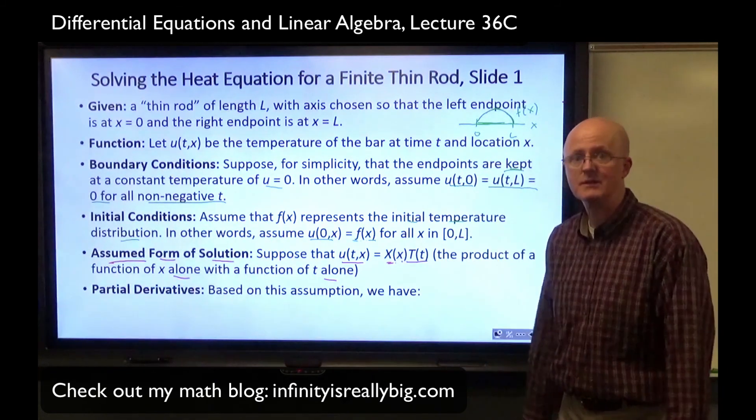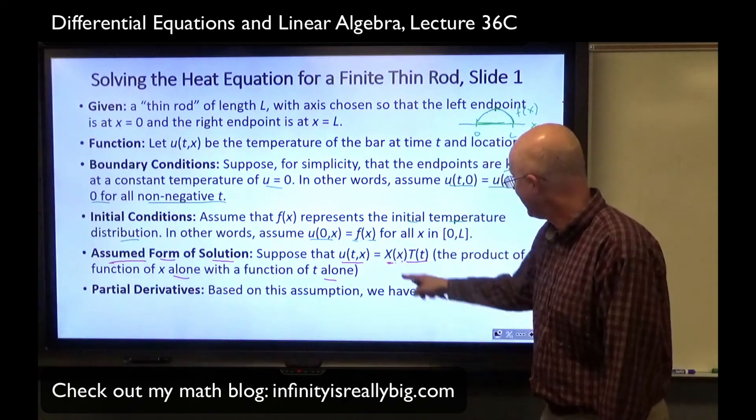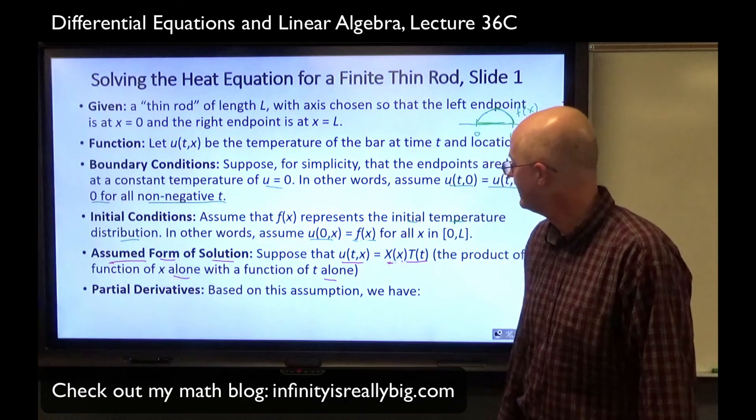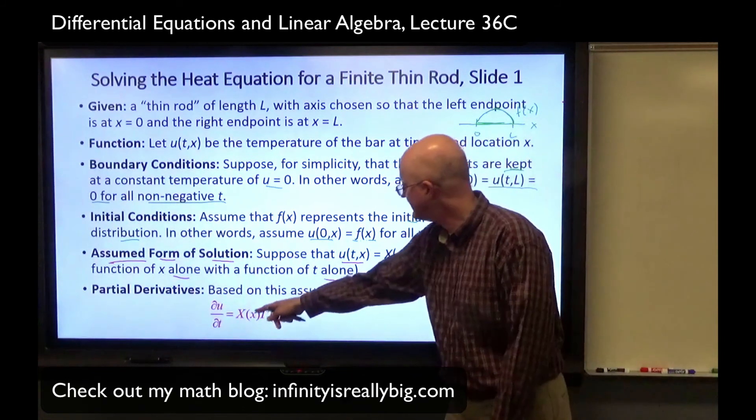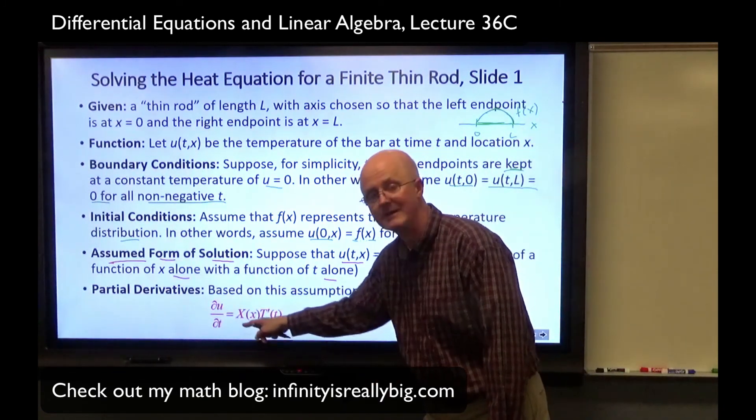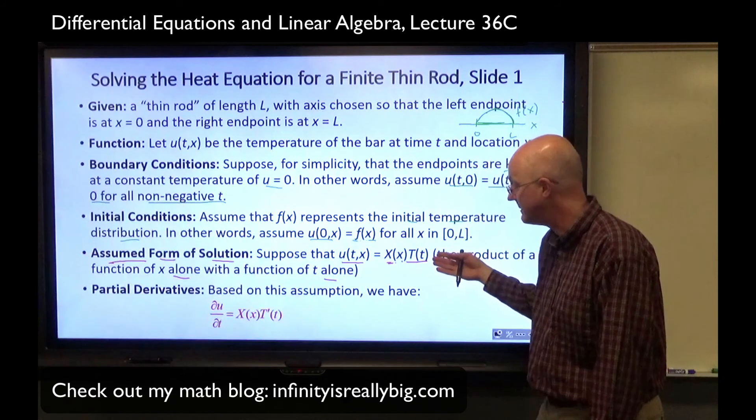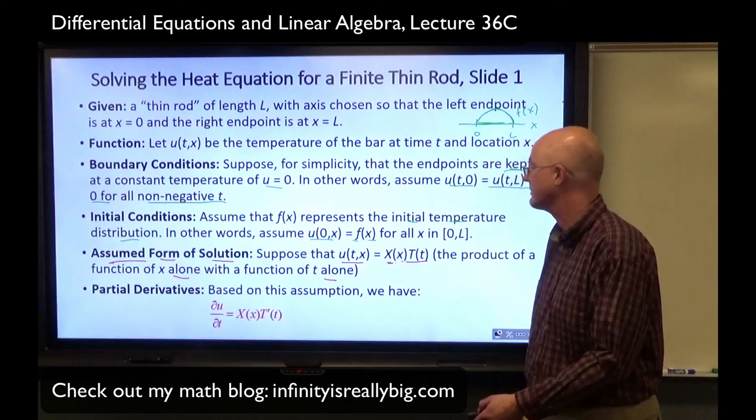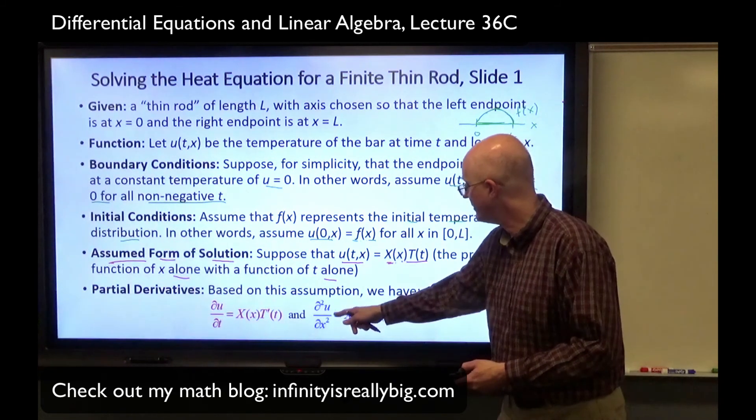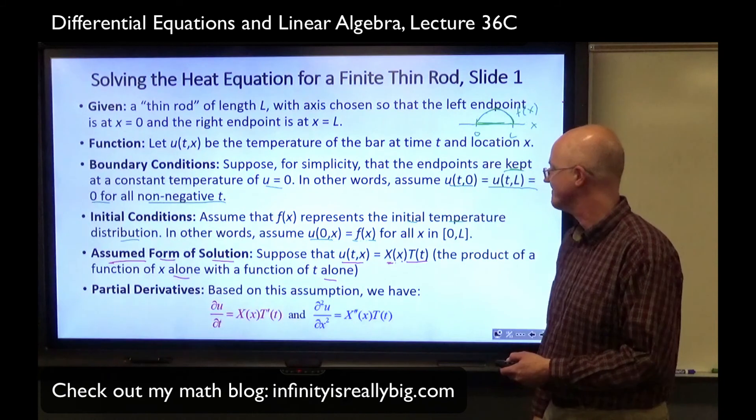If we make this assumption, then the partial derivatives are easy to calculate. The partial of this function with respect to little t, capital X of x, weird notation, is constant with respect to t. The partial of u with respect to t is going to be capital X of x times capital T prime of little t. This is like a constant with respect to t. That's intuitively why we were hoping something like this would work to begin with. And a similar kind of thing is going to happen with the second derivative with respect to x.